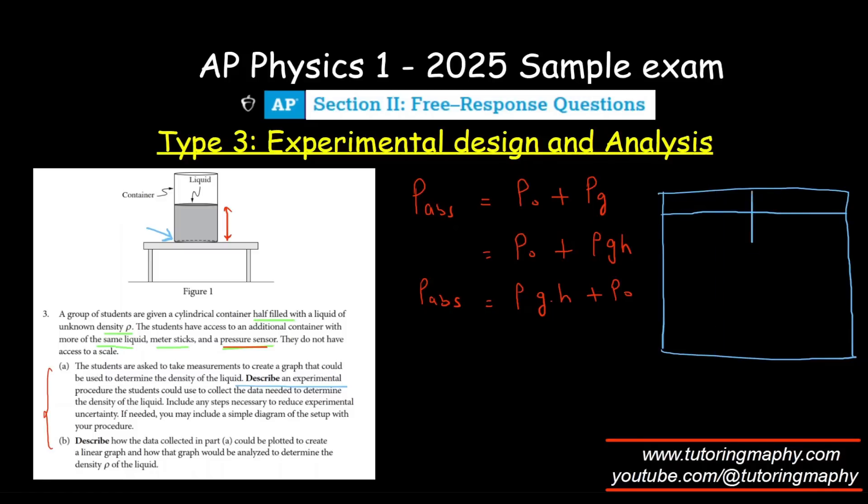Since we have to reduce the uncertainty as well, after measuring height and pressure at the bottom, I'm going to repeat this procedure four times so that the uncertainty is reduced, and take the average of those values.